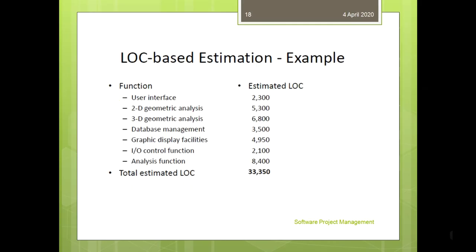An example for LOC-based estimation: here are all the functions and their respective estimated lines of code. User interface has an estimated 2,300 lines of code. 2D generation geometrical analysis has an estimated 5,300 lines of code. Likewise, there are many functions, and the total estimated lines of code is 33,350.